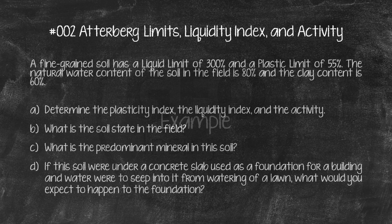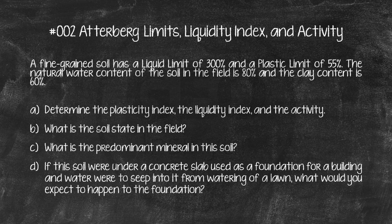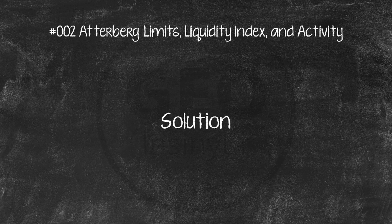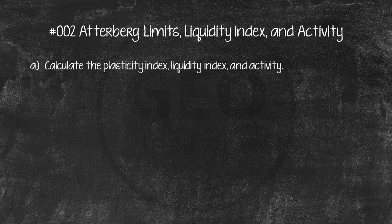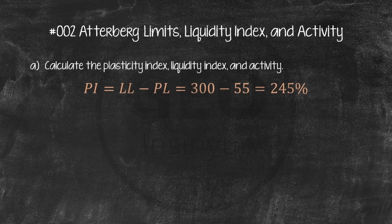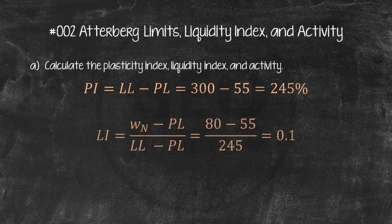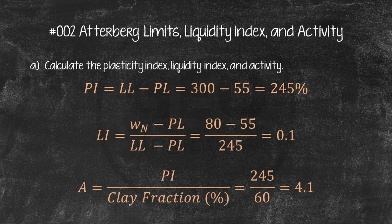Example: A fine-grained soil has a liquid limit of 300% and a plastic limit of 55%. The natural water content in the field is 80% and the clay content is 60%. Determine: A) the Plasticity Index, Liquidity Index, and Activity; B) the soil state in the field; C) the predominant mineral; and D) the expected effect on a foundation if water seeps in from lawn watering. Solution A: Plasticity Index = 245%, Liquidity Index = 0.1, Activity = 4.1.